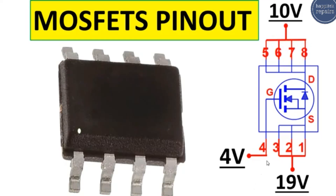Always, for every MOSFET, the gate receives the control signal. Every MOSFET contains inside it a diode, as you can see, between the drain and the source.